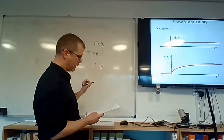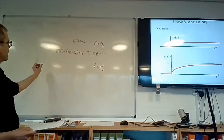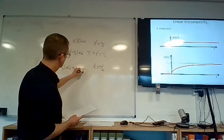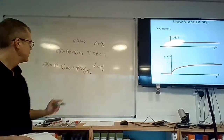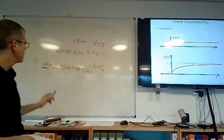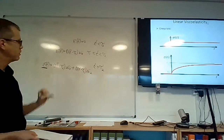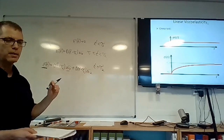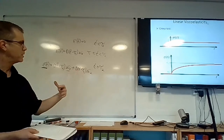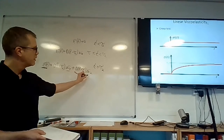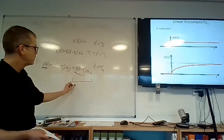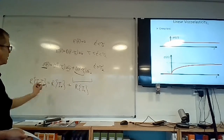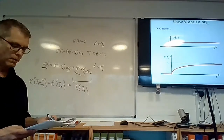Now let's see what happens when time is greater than or equal to tau-2. The strain at any time t of interest, as long as t is larger than tau-2, is equal to the creep compliance D evaluated at t minus tau-1 times delta-sigma-1 — that is the effect of the first stress step — plus the creep compliance evaluated at t minus tau-2, which is the time elapsed since delta-sigma-2 was applied, multiplied by delta-sigma-2. This is the superposition principle applied to linear viscoelasticity.